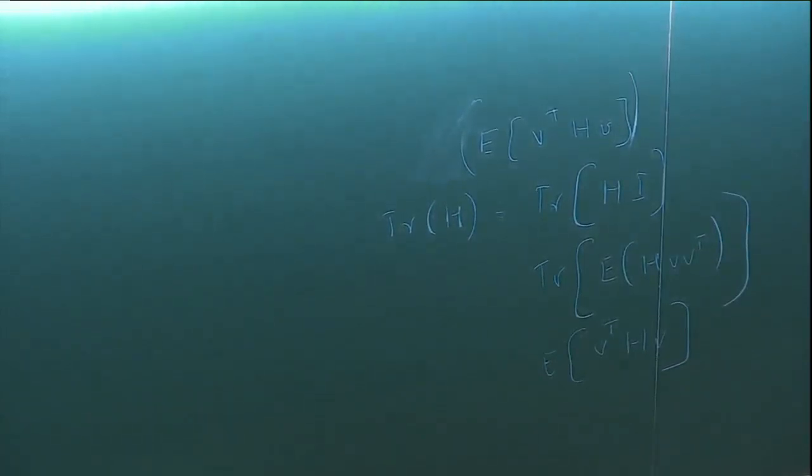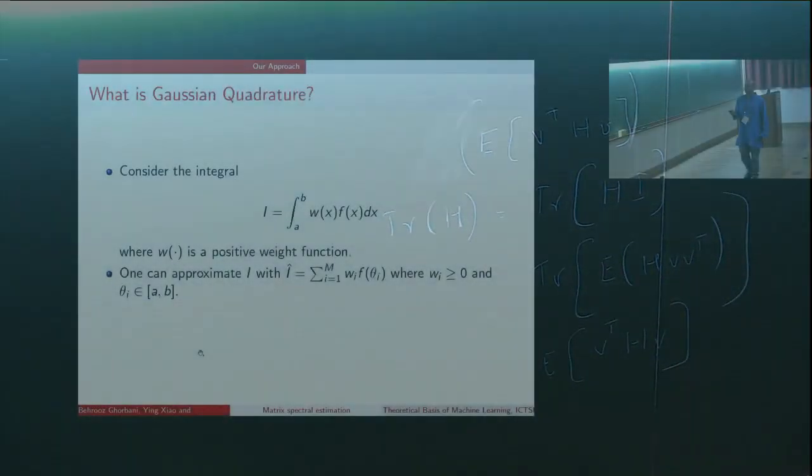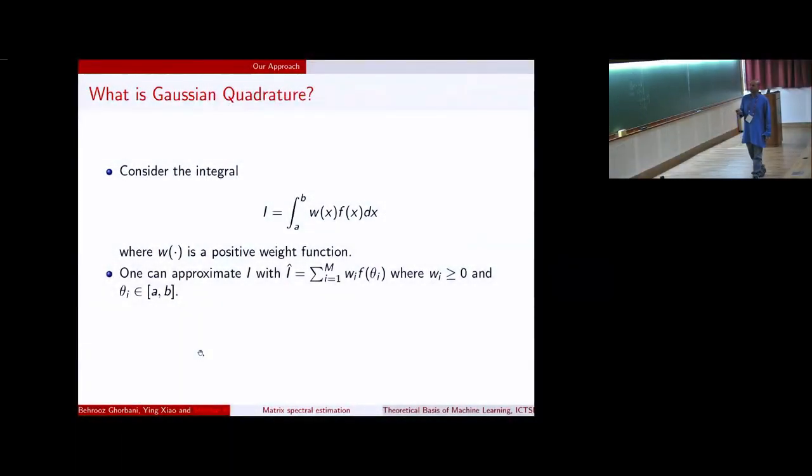Once you can write your estimator phi V as an integral, you can approximate it by Gaussian quadrature. So just briefly, I want to get into what Gaussian quadrature is, in case somebody is not familiar with it.